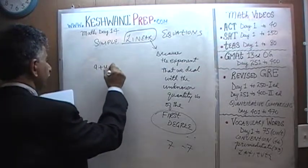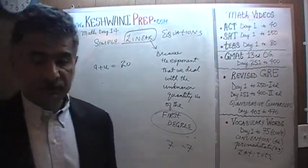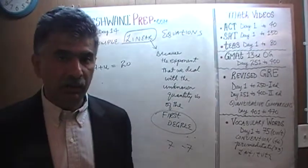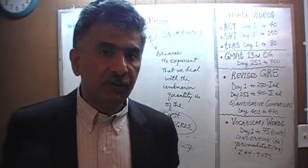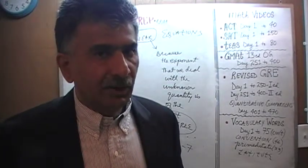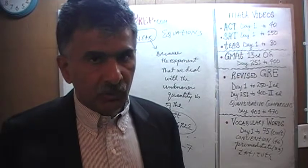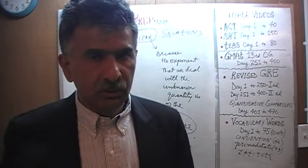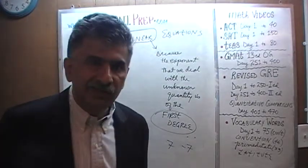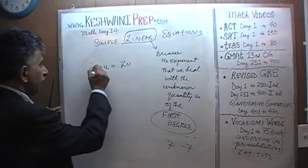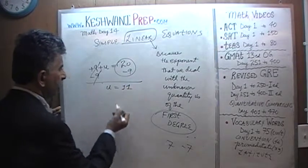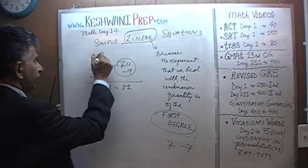Next: 9 plus u equals 20. In case you're wondering why the variables keep changing — I do it on purpose. In most algebra books they keep using x, and then students begin to imagine that everything in algebra has to be x. It does not. These letters represent an unknown quantity. You can call it a, b, z, t, u, m — whatever you want. Here we are calling it u. We subtract 9 from both sides; 9 drops out and u equals 20 minus 9, which is 11.